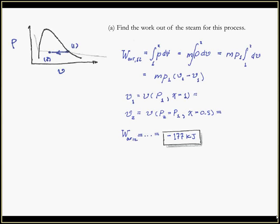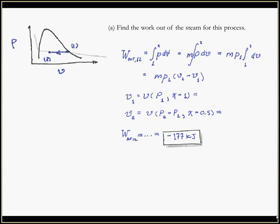I'm skipping the calculation steps to focus on the main ideas — you'll see me use an ellipsis to indicate steps were left out. Getting back on track: the useful work out of the steam for the process. Notice that the work out of the process is negative — I ended up putting work into the system instead of getting work out.